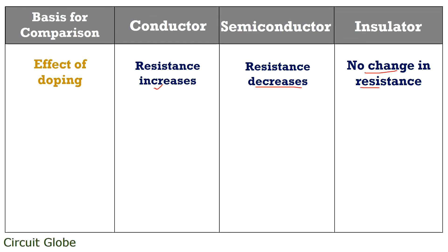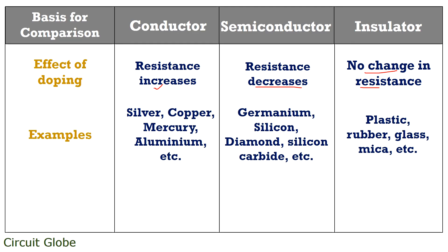Considering some examples: materials like silver, copper, mercury, and aluminium are known as conductors. While materials like germanium, silicon, diamond, and silicon carbide are semiconductors. While plastic, rubber, glass, and mica are known as insulators.